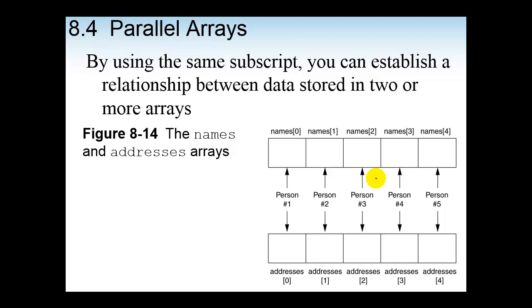Next concept we look at is parallel arrays, and sometimes it is useful to store related data in two or more arrays. And here we can see that the names array stores the name of five people, and the addresses array stores the addresses of the same five people. That is what we can classify as a parallel array. Now if we were going to access this data at any point, we would use the same subscript with both arrays to get the information for the same person.